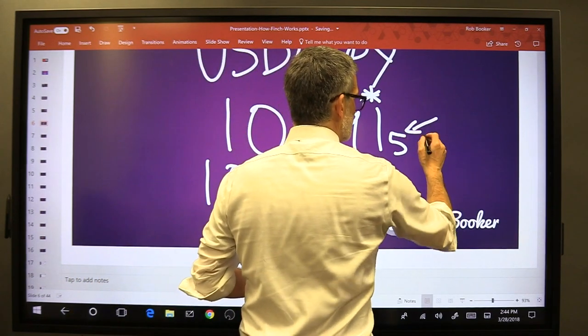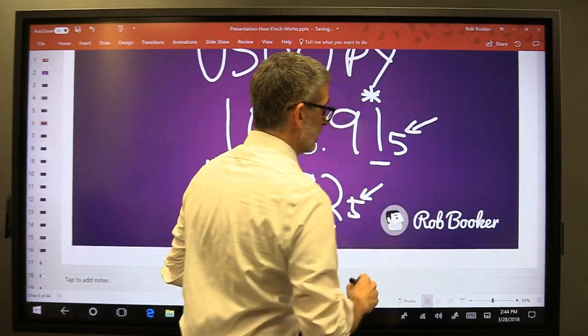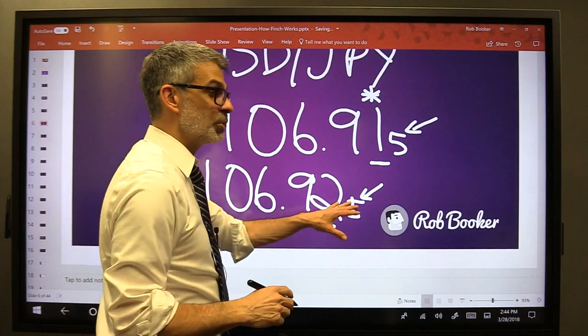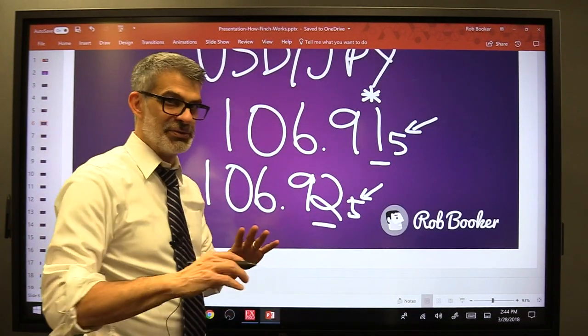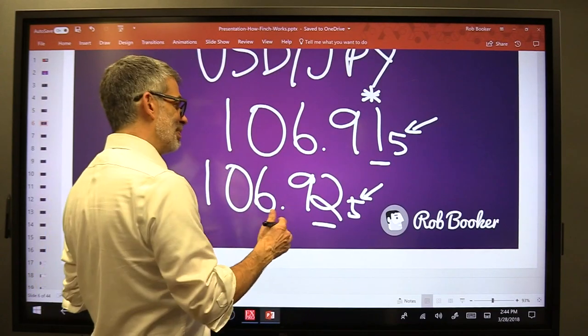Now, this fifth decimal, or third decimal in the Japanese yen pairs, this one is confusing to a lot of people, and that's not a full pip, that's a fraction, that's a tenth of a pip. It's a pipette.